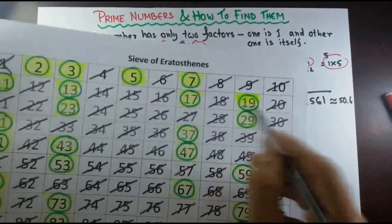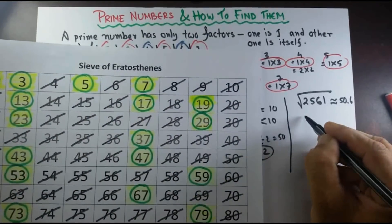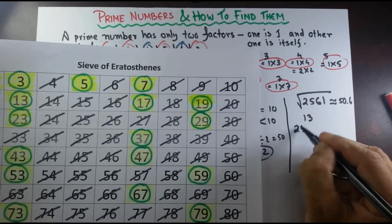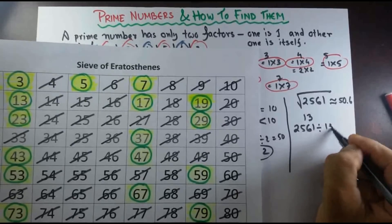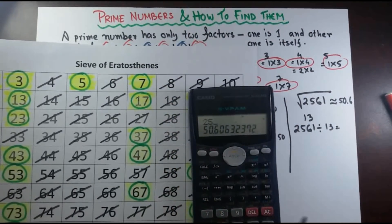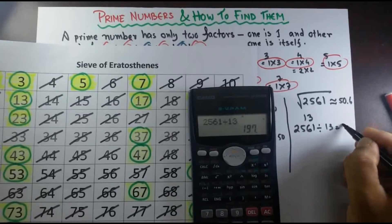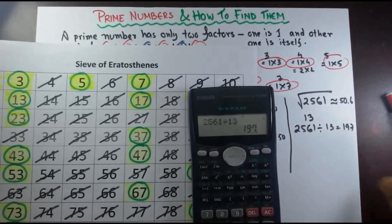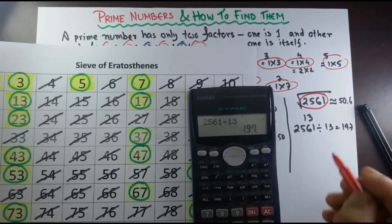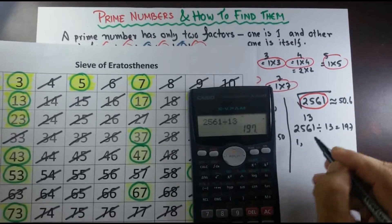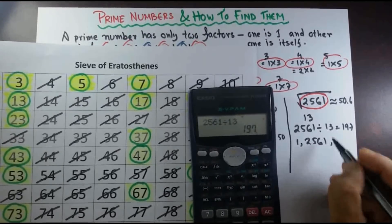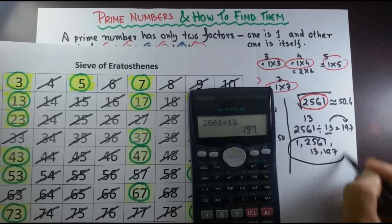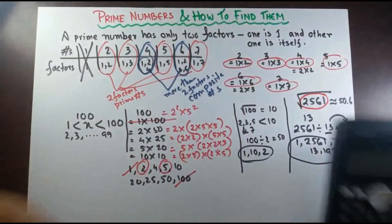If we try them one by one, we'll find that prime number 13 divides 2,561. 2,561 divided by 13 gives 197. So we can say that 2,561 is not a prime number — it's a composite number, because it has factors 1, 2,561, 13, and 197.